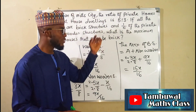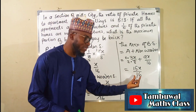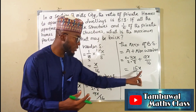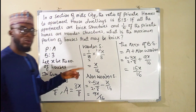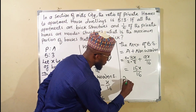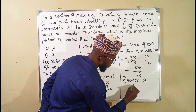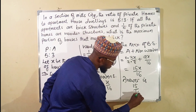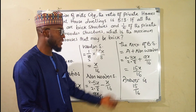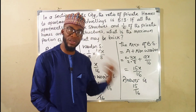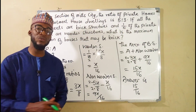So the maximum number of brick structures is fifteen X over sixteen. Since X represents all the houses in the city, this means fifteen over sixteen of all the houses are brick structures at maximum. Our answer is fifteen over sixteen. This is the maximum portion of all houses collectively that may be brick structures. Thank you for watching, do have a nice day.